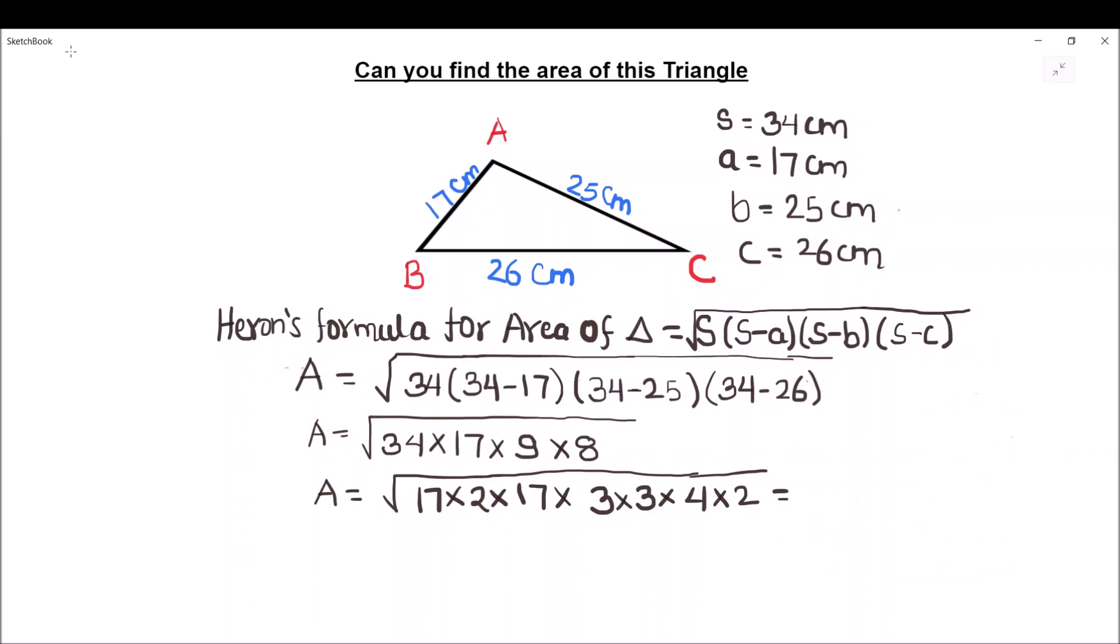So as these are all square numbers, we can write them as 17 squared times 3 squared times 4 squared. This 2 and 2 gets multiplied and it becomes 4. So 4 times 4 is 4 squared.